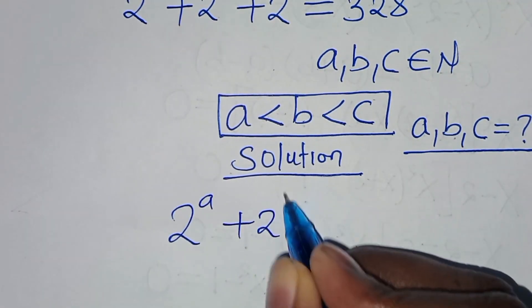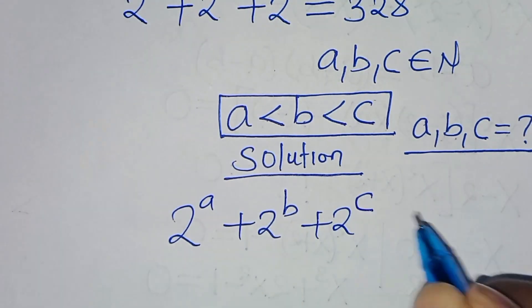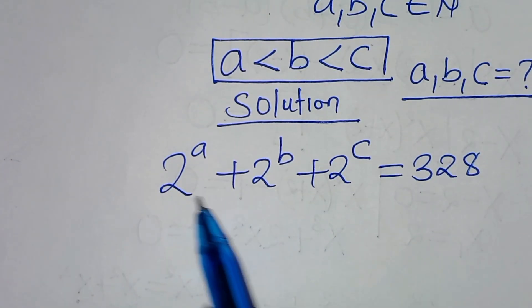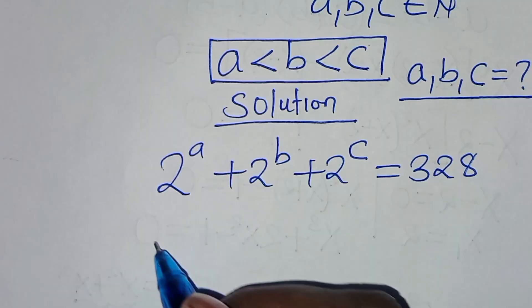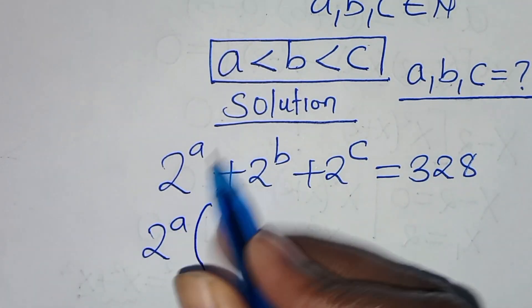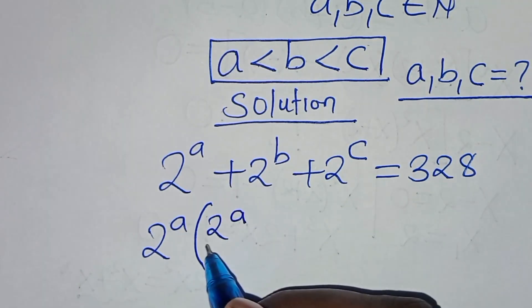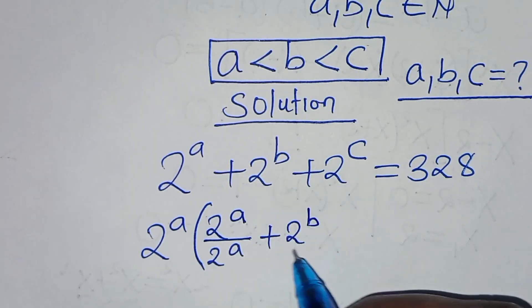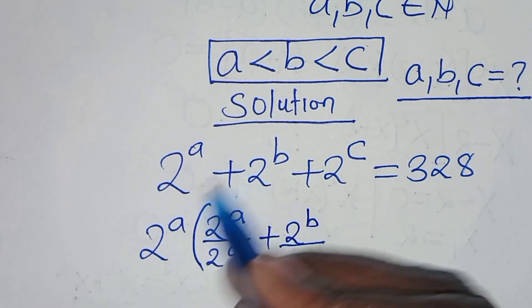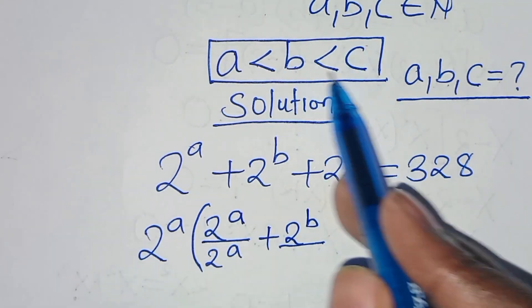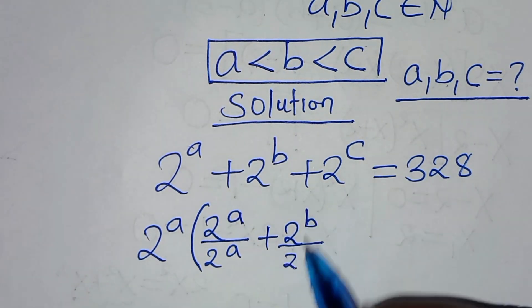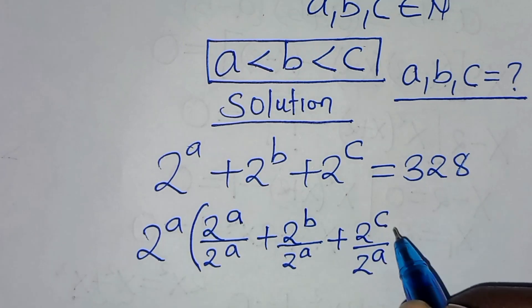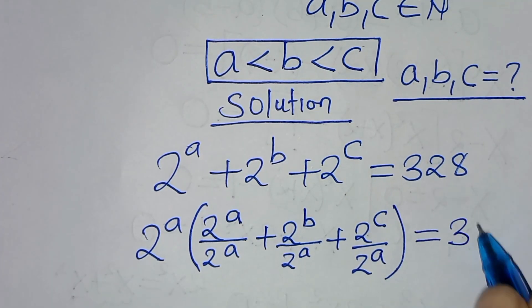We have 2^a + 2^b + 2^c = 328. The first step is to factor out 2^a, so we get 2^a times the quantity (2^a/2^a + 2^b/2^a + 2^c/2^a), which equals 328.